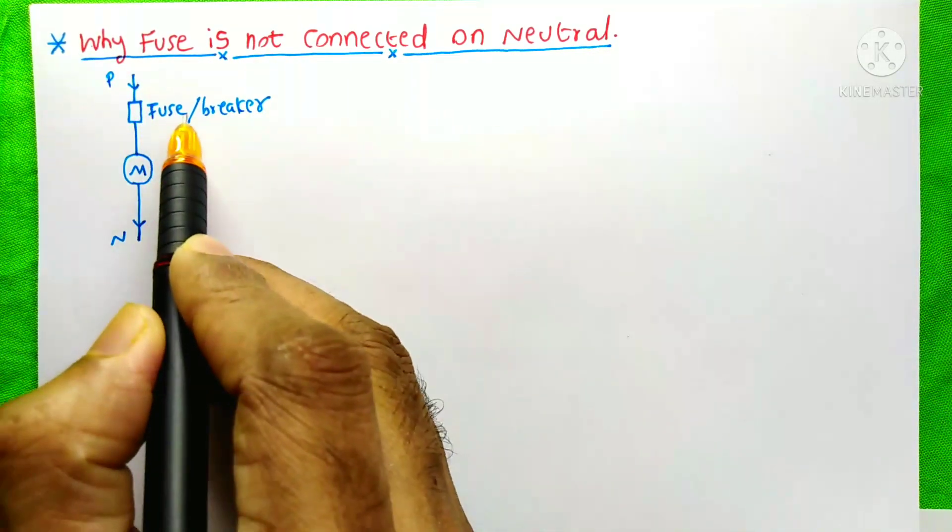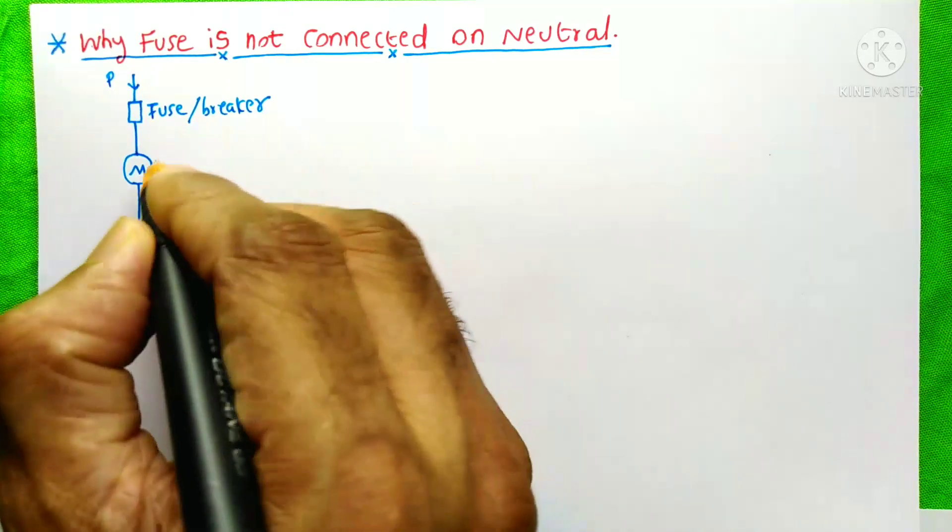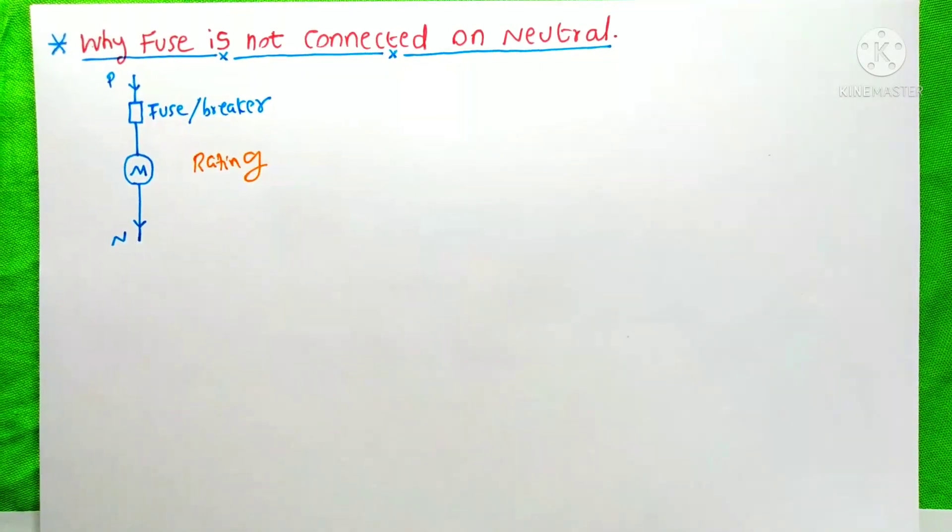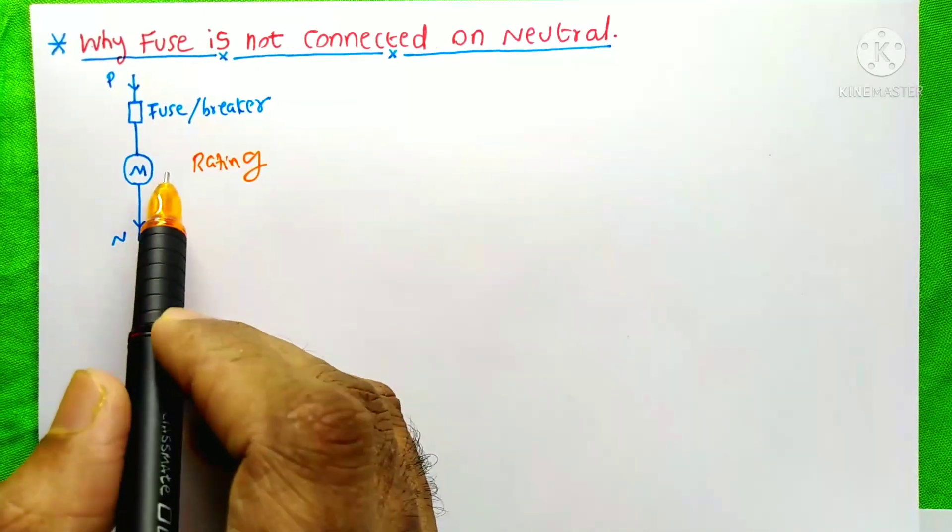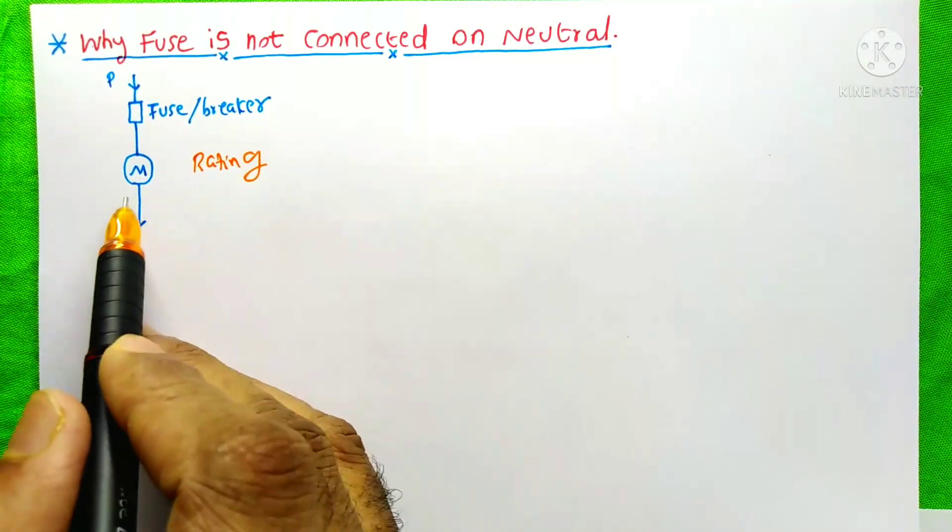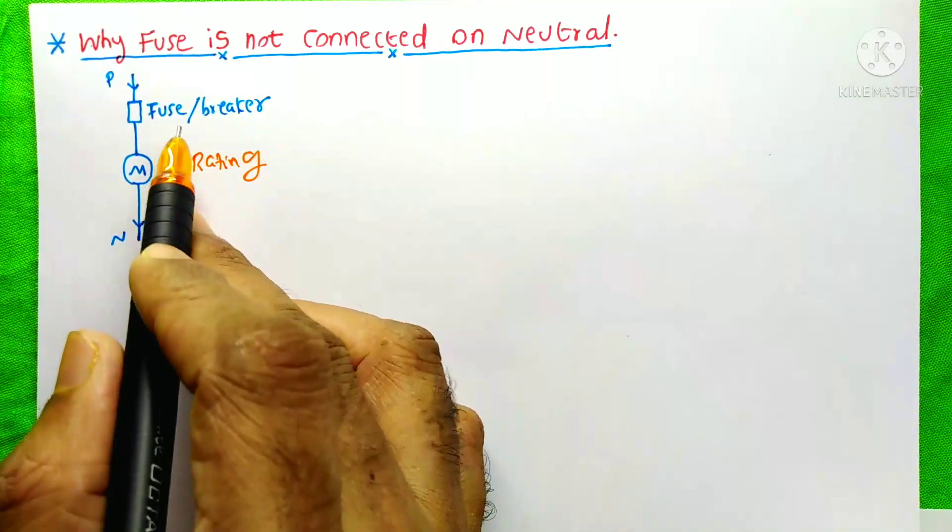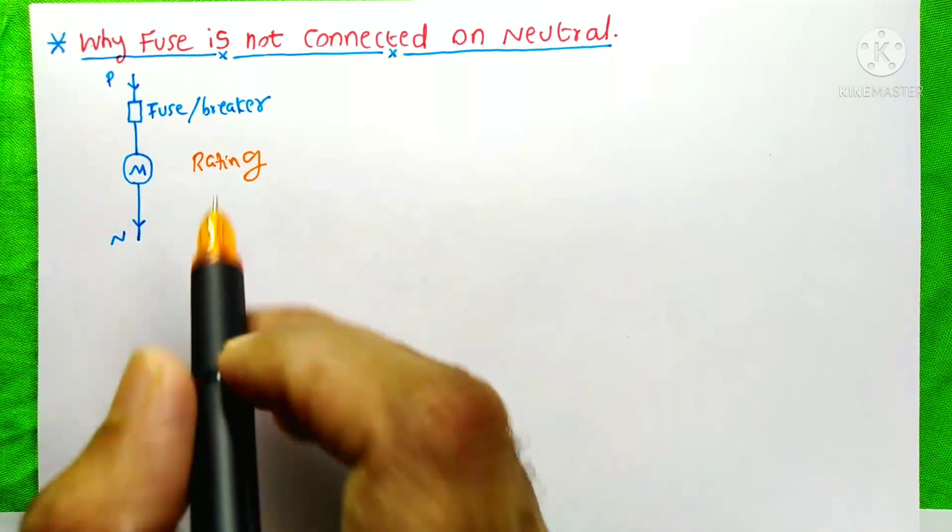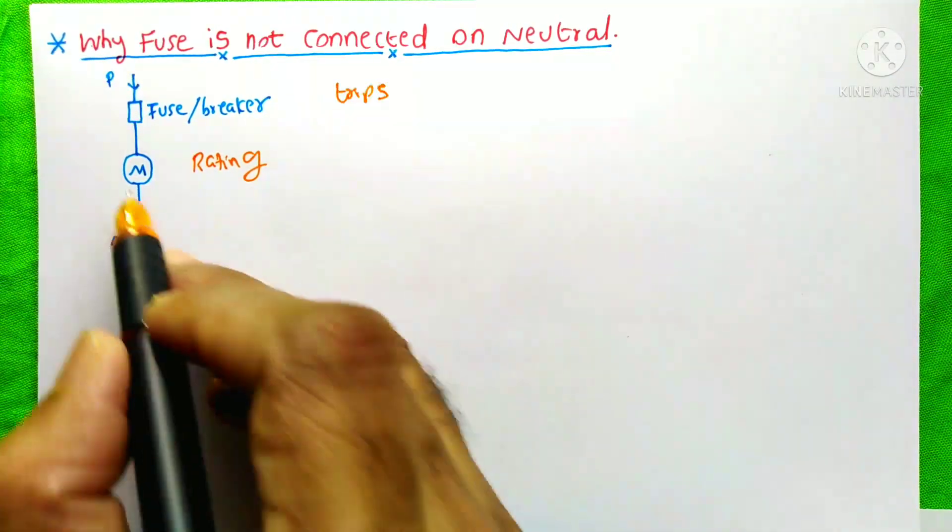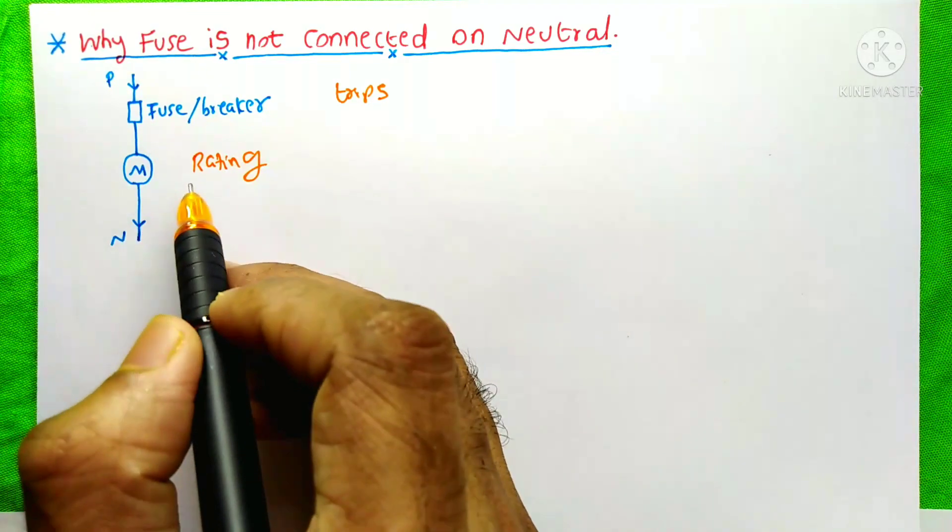We select a fuse according to the rating of this motor. If for any reason this motor starts to take more current than its rating, then at that time the fuse or breaker suddenly blows or trips and protects the motor from damage.